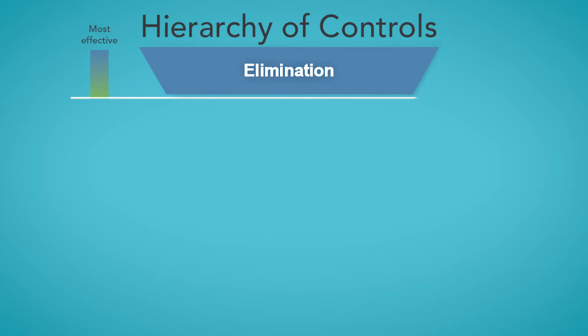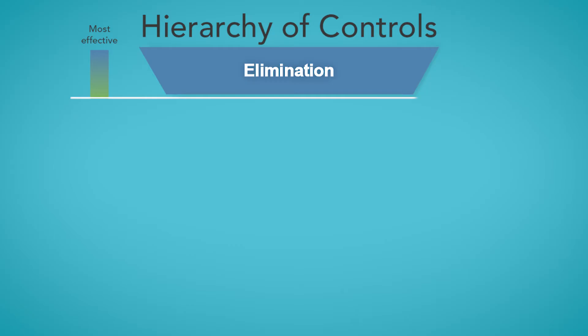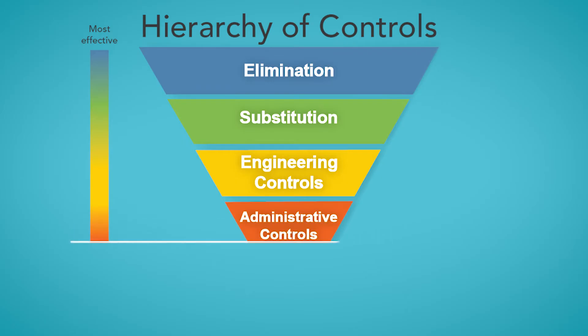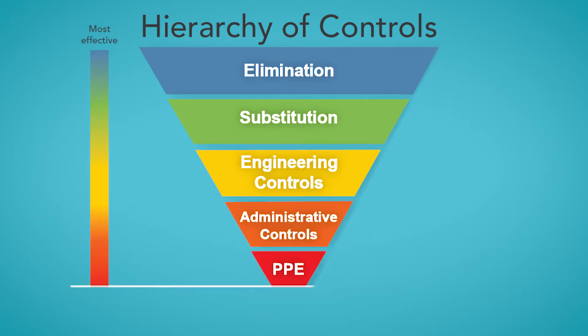At the top we have elimination, followed by substitution, engineering controls, administrative controls, and at the very bottom we have personal protective equipment.